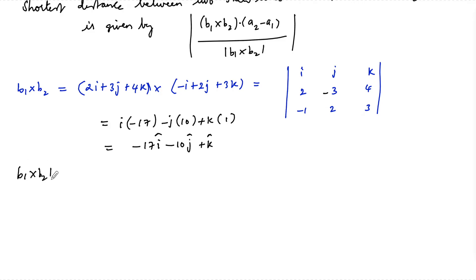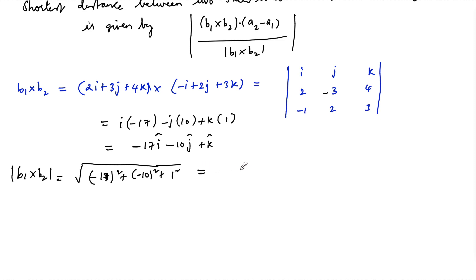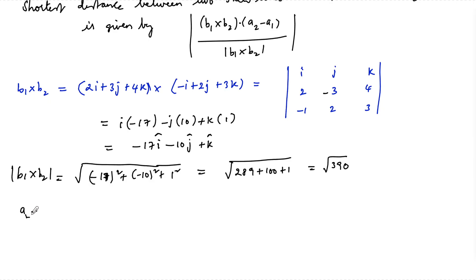The magnitude |b₁ × b₂| = √((-17)² + (-10)² + 1²) = √(289 + 100 + 1) = √390.